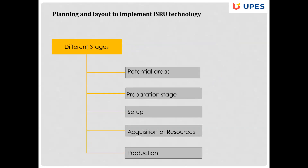Though there are many in-situ resources, here we focus on the four main types: carbon dioxide, oxygen, water, and methane. The development of ISRU technology is categorized under five stages: Stage 1 is finding potential locations, Stage 2 is preparation, Stage 3 is setup, Stage 4 is acquisition of resources, and Stage 5 is production.